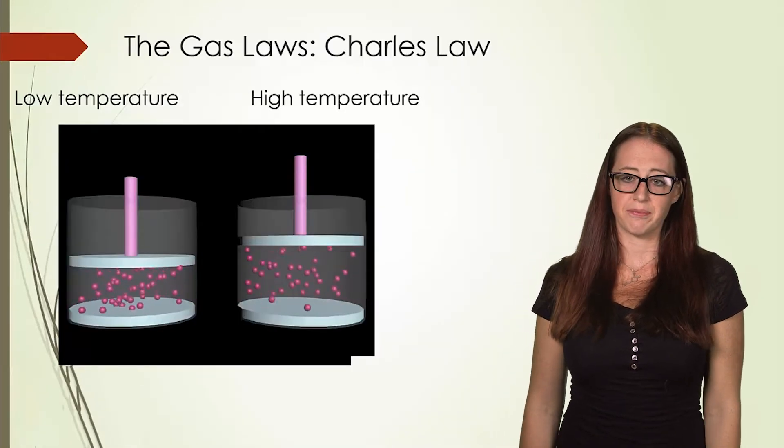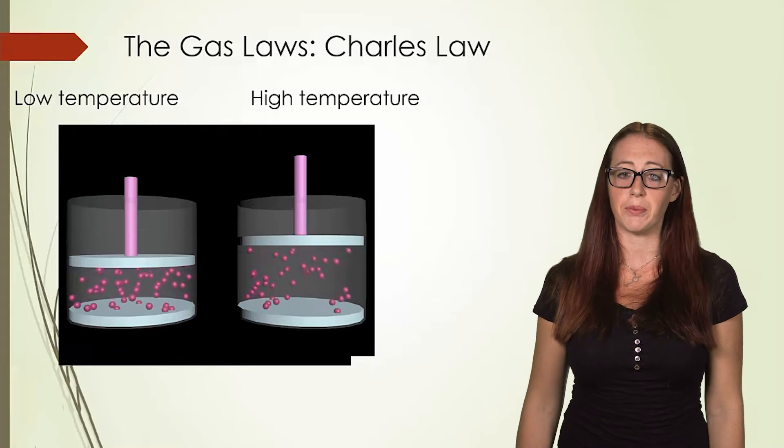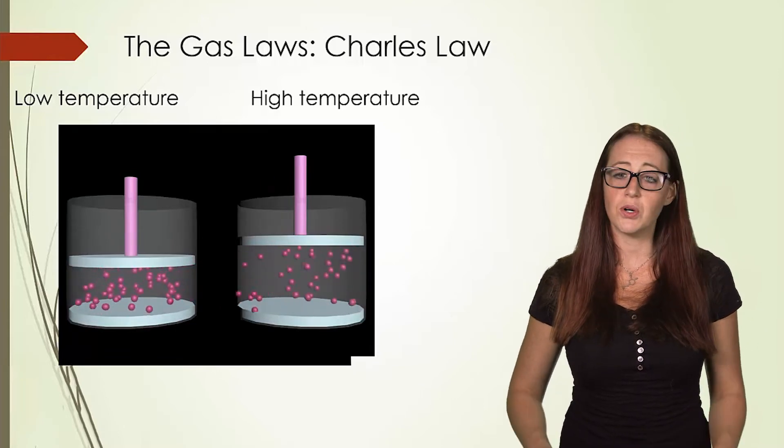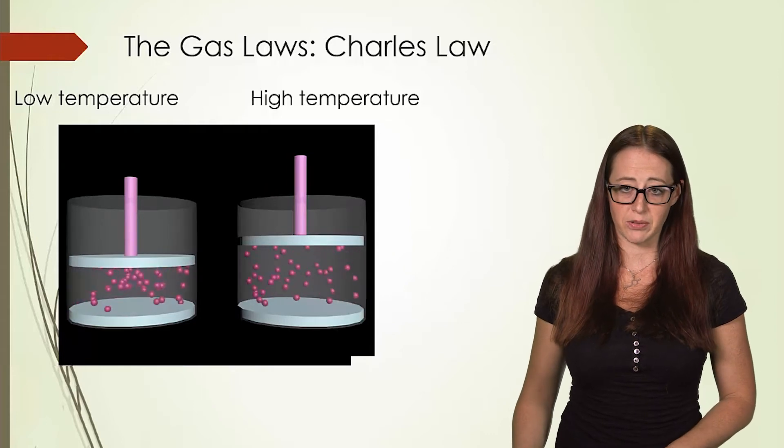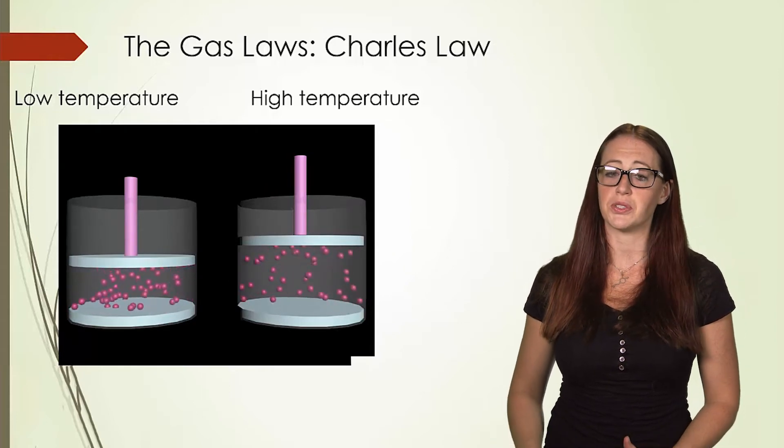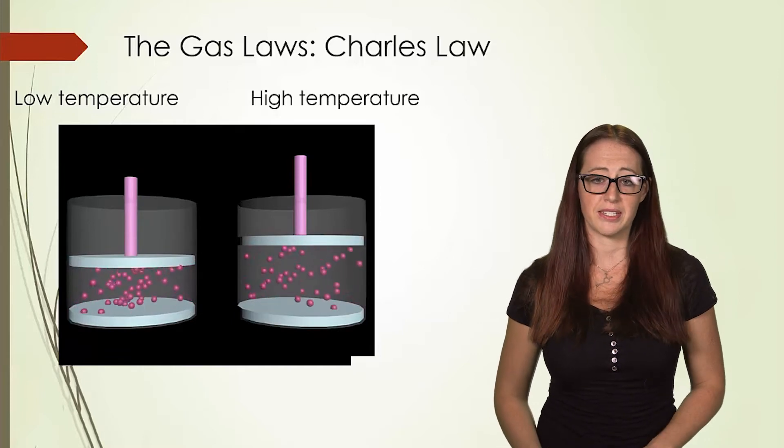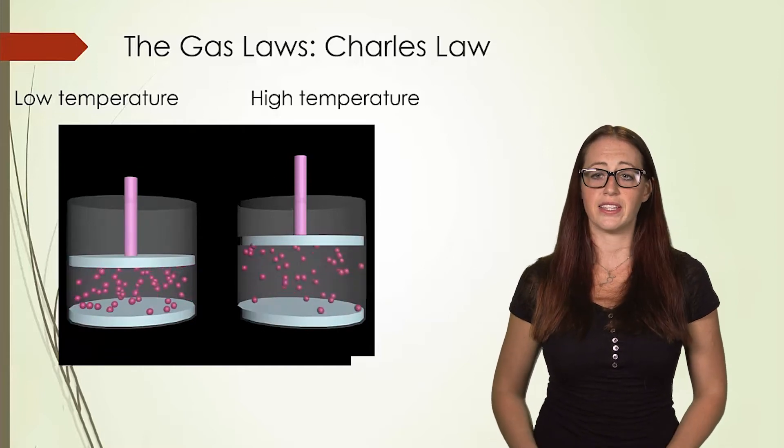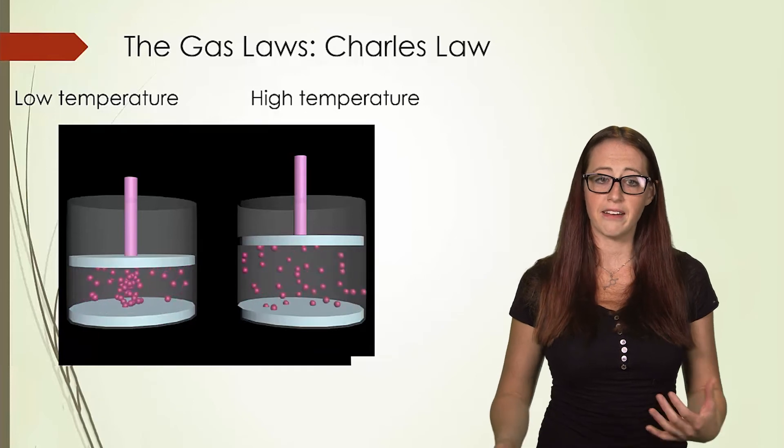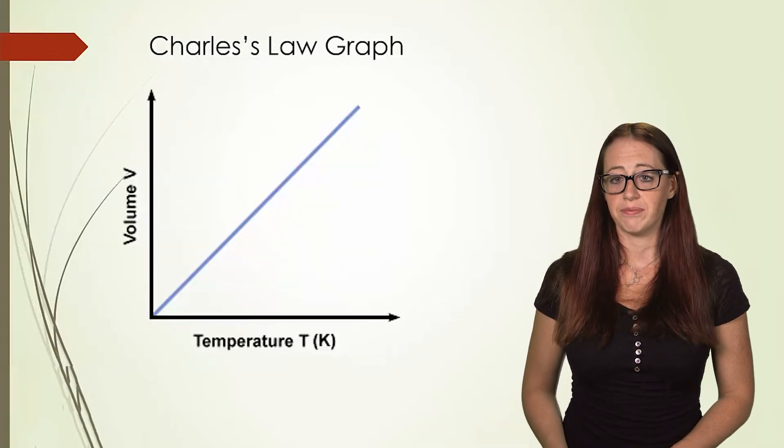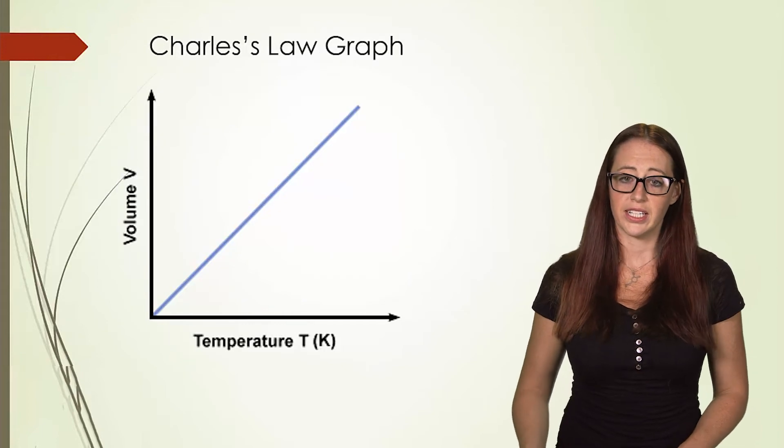Going back to our piston system, we can look at this the same way that we did Boyle's law. If you decrease the temperature, the atoms are no longer pressing on the piston with as much force. This means the volume will shrink. If you increase the temperature, you increase the speed of the particles, increasing the force that you put on the piston and forcing it upwards. We can graph this as a straight line. Increasing temperature increases volume.